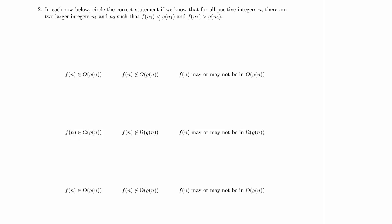We're going to circle the correct statement if we know that for all positive integers n, there are two larger integers, n1 and n2, such that f of n1 is less than g of n1, and f of n2 is greater than g of n2. So that's what we know, and we're supposed to say things like, is f of n in big O of g of n, is f of n in big omega of g of n, is f of n in big theta, and what remains is to talk about little o and little omega.